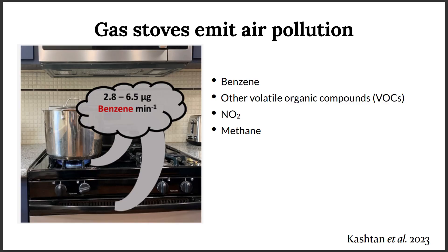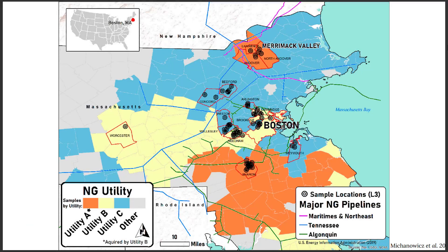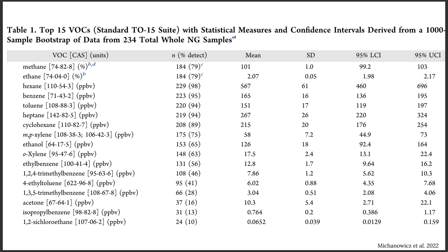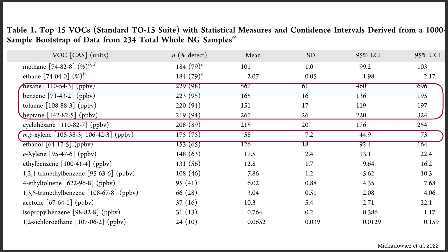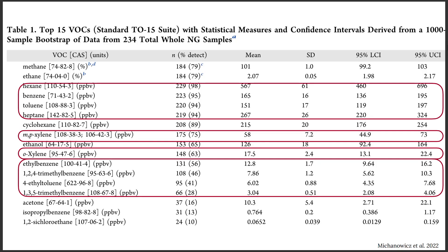Moving over to the other end of the supply chain — the stove. Stoves do emit air pollution. There's benzene, which is a carcinogen that causes cancer, a whole lot of volatile organic compounds, NO2 when you burn gas, and methane — the greenhouse gas we're all worried about from a climate standpoint. Zana, myself, Nathan, and maybe a few others in the room were involved in a study that basically sampled gas around Boston. We put it in a canister, sent it to a lab, and they told us what was in it. It looks like an organic chemistry textbook. There was a lot of methane as expected, a lot of ethane as expected, but also hexane, benzene, toluene, heptane — carcinogenic — MP xylene, carcinogenic, and then all these other things that are also carcinogenic.